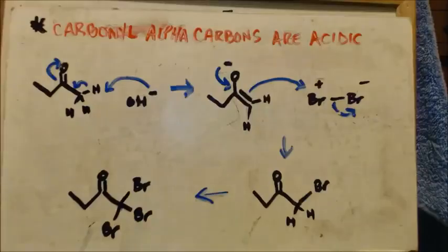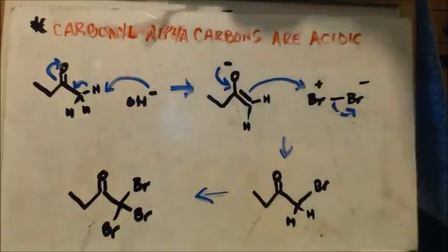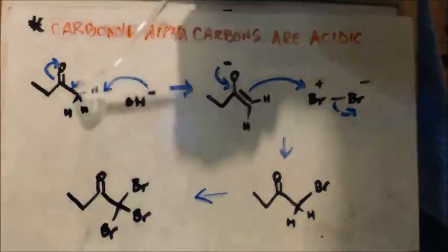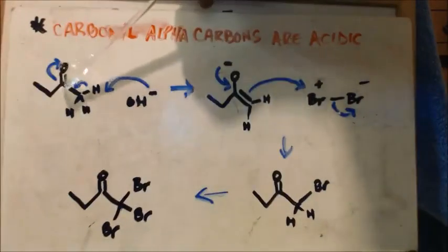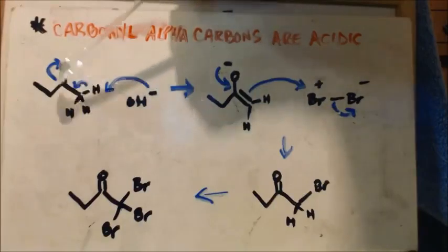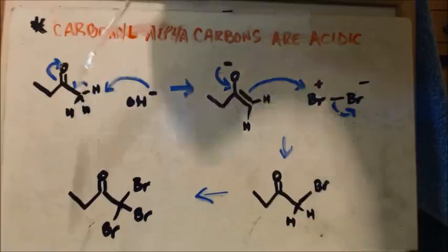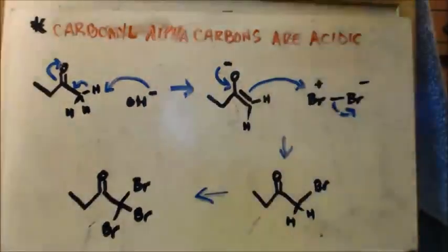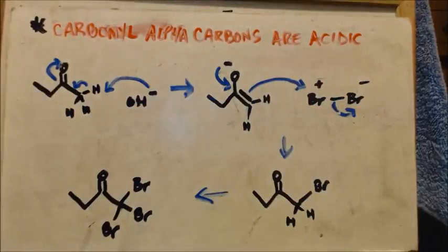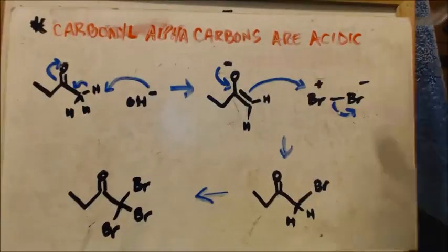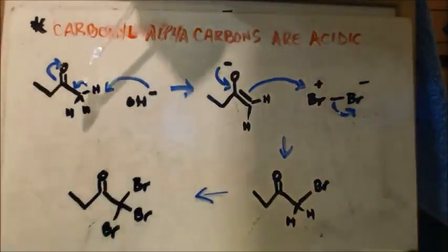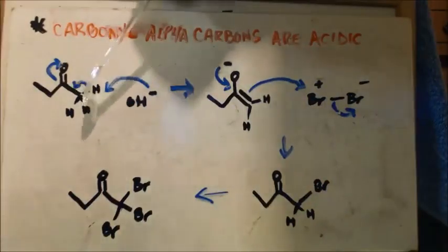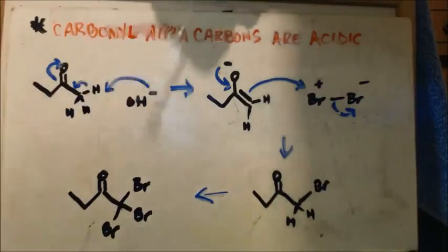One thing you need to know is that carbonyl alpha carbons are acidic. This is your carbonyl — the one with a double bond. That carbon is your carbonyl carbon, and this is your alpha carbon because it's right next to it. This alpha carbon is acidic. So you have sodium hydroxide in solution, and you have chlorine or bromine — a halogen in solution. That's what makes your bleach. So your OH comes in as a base and snags off this hydrogen because this is an acid — not a great acid, but an acid nonetheless.